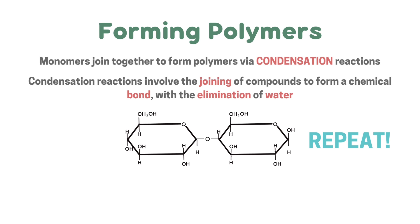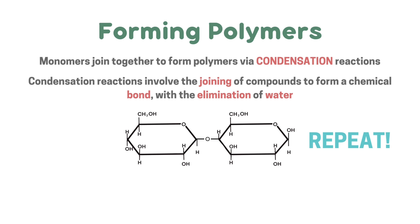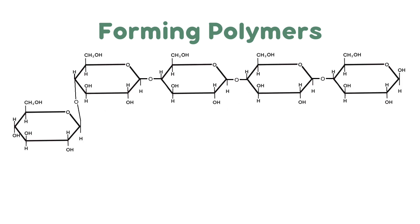This process repeats to create a polymer. At the stage of two monomers joined together we have a dimer, which is not yet a polymer. Examples of polymers include the larger chain structures formed by continuing this repetition.